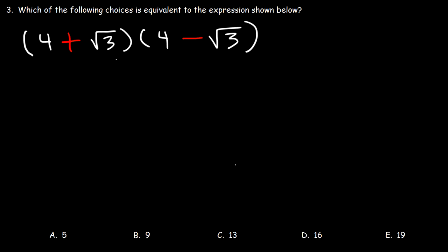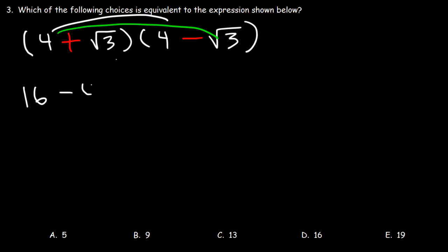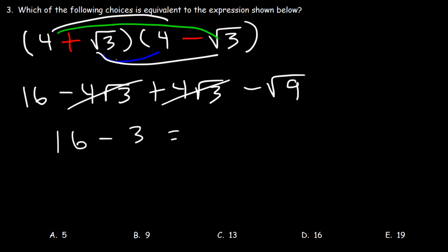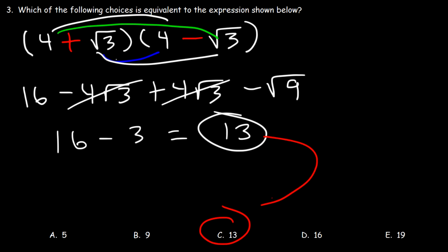Number 3. Which of the following choices is equivalent to the expression shown below? So we need to FOIL. 4 times 4 is 16. 4 times negative root 3 is negative 4 root 3. Root 3 times 4 is positive 4 square root 3. Root 3 times root 3 — that's 3, so 3 times 3 is 9. Negative 4 plus 4 will cancel, they add up to 0. And the square root of 9 is 3. 16 minus 3 is 13, so answer choice C is the right answer.